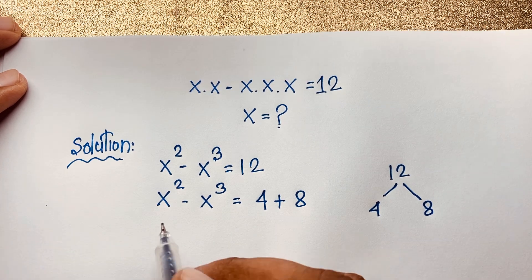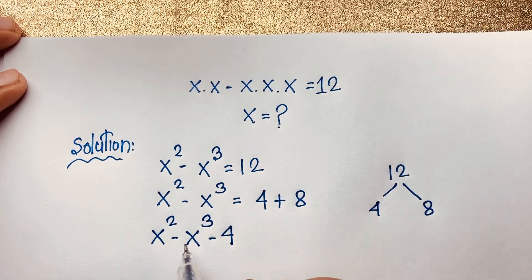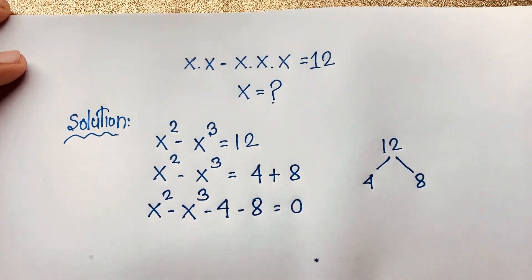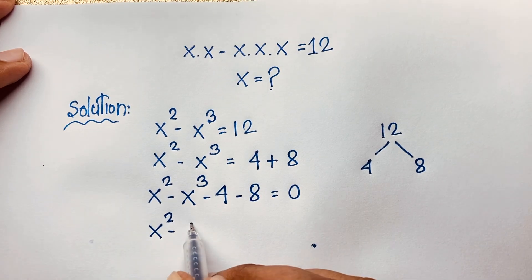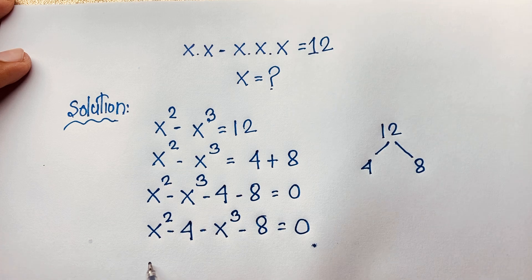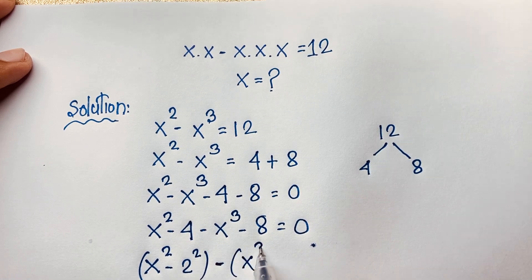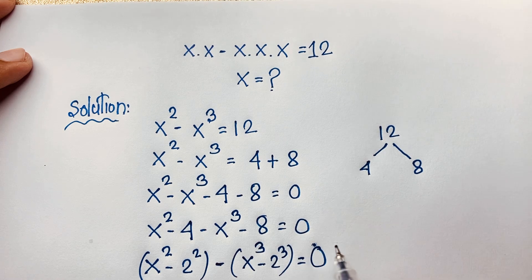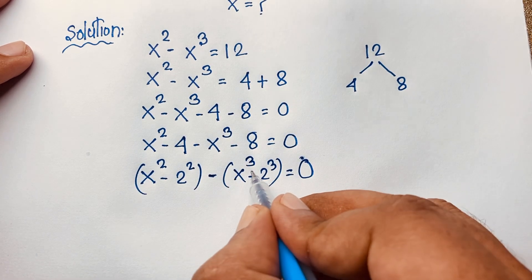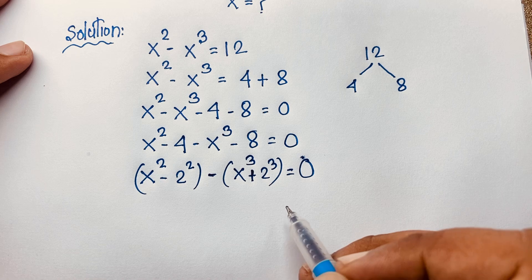Here x squared minus x cubed equals 12. I move positive 4 to this side making it negative 4, and move positive 8 making it negative 8, equal to 0. So we get x squared minus 4 minus x cubed minus 8 equals 0. Now x squared minus 2 squared gives 4, and x cubed minus 2 cubed gives 8. There is a positive sign here because minus times minus gives plus.